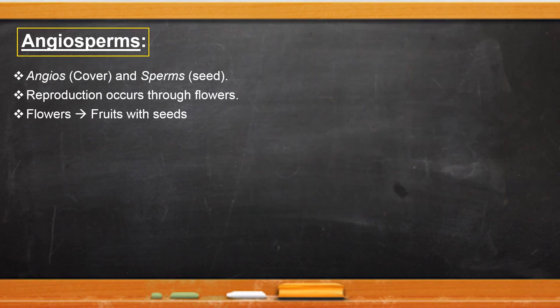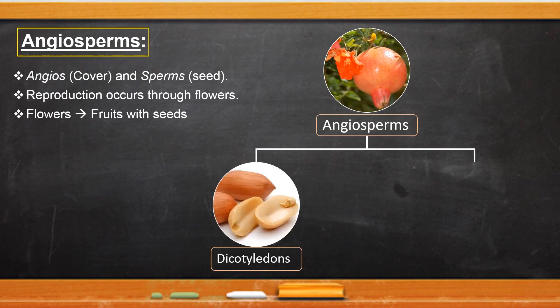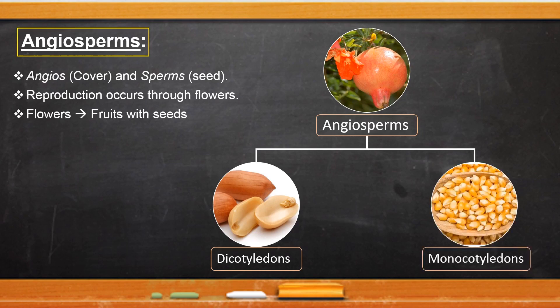On the basis of division of seed, the angiosperms are further divided into two groups: dicotyledonous plants, meaning seeds can be divided into two equal parts, and monocotyledonous plants whose seeds cannot be divided into two equal parts.